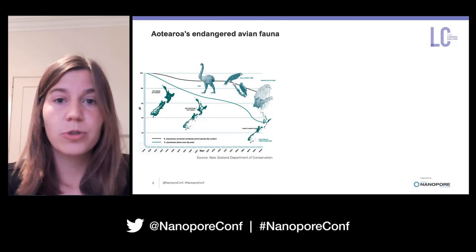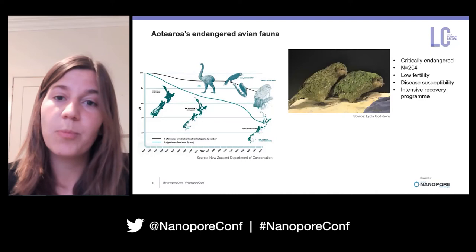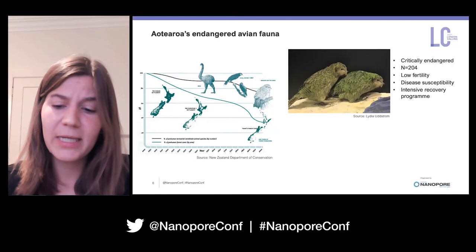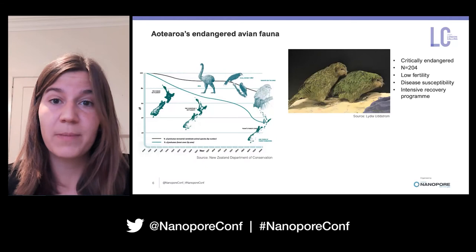Even nowadays the kakapo remains critically endangered, with around 204 individuals left. It is highly inbred with low genetic diversity, which has led to huge reproduction problems and infertility, as well as increased disease susceptibility.